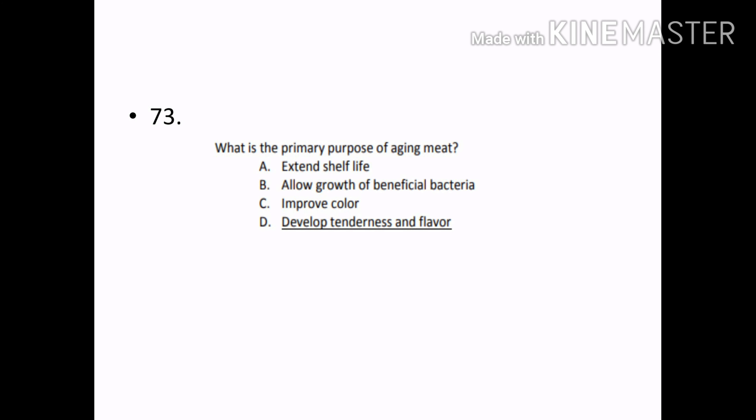What is the primary purpose of aging of meat? Options — Extend shelf life, Allow growth of beneficial bacteria, Improve color, Develop tenderness and flavor. Correct answer: Option D — Develop tenderness and flavor.